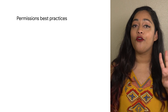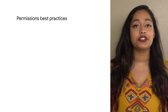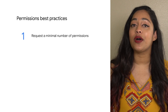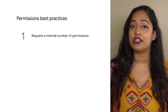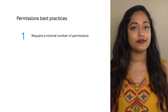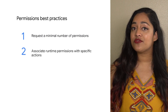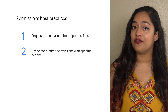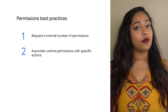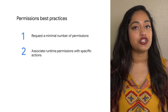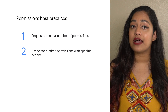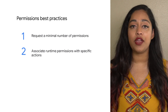Here are four best practices to follow in order to use permissions effectively. First, your app should request only the permissions that it needs to complete the task the user is currently performing. Second, only ask for permissions when they are necessary for the actions the user is performing. For example, if your app uses location to show nearby pizza parlors, wait till the user interacts with that feature before asking for location permission.